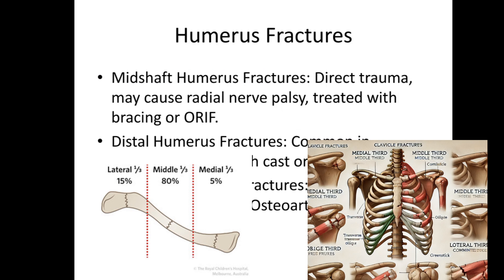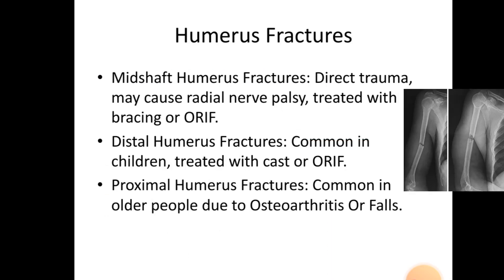Mid-shaft humerus fractures are caused by direct trauma and may cause radial nerve palsy, treated with bracing or ORIF. Distal humerus fractures are common in children, treated with a cast or ORIF. Proximal humerus fractures are common in older people due to osteoarthritis or falls.